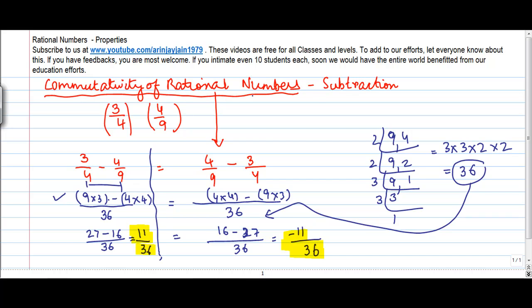So we say that the rational numbers are not commutative for subtraction. So a minus b, for any two rational numbers, is not equal to b minus a. This is the rule for commutativity of rational numbers insofar as subtraction is concerned.